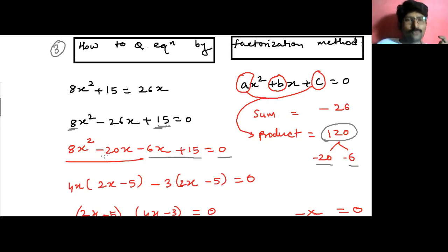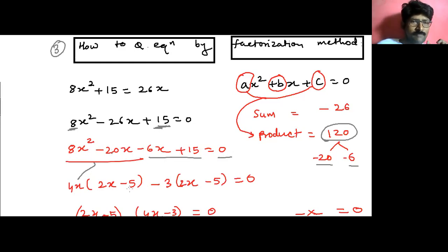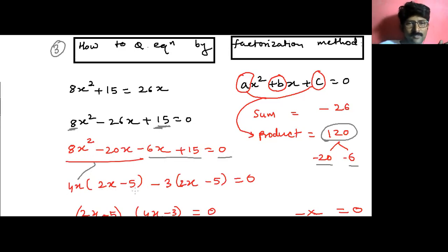Now make two groups — the first two terms and the last two terms. From the first two terms, 8x squared minus 20x, we can take out 4x as a common factor. Taking out 4x, inside the bracket we get 2x minus 5. From the second group, minus 6x plus 15, we can take out minus 3 as common.